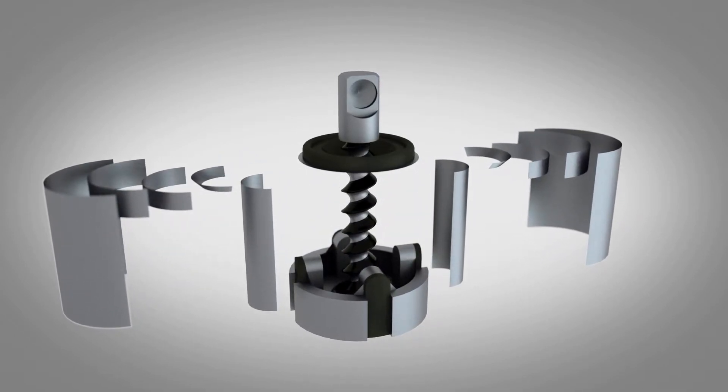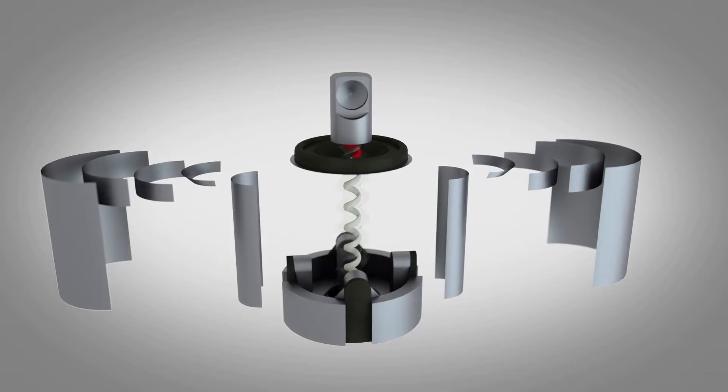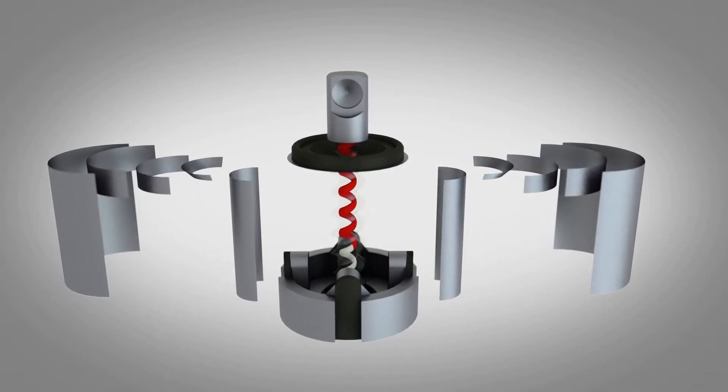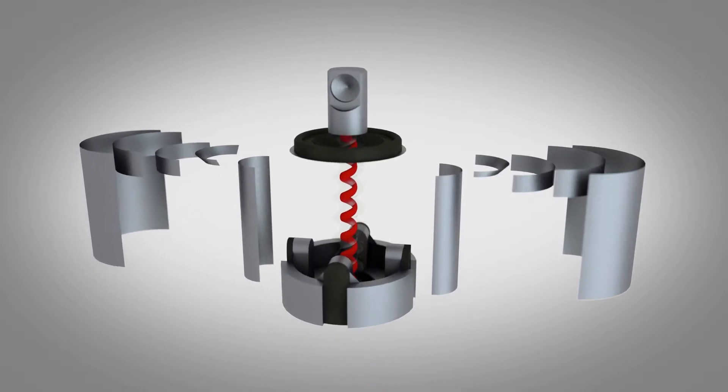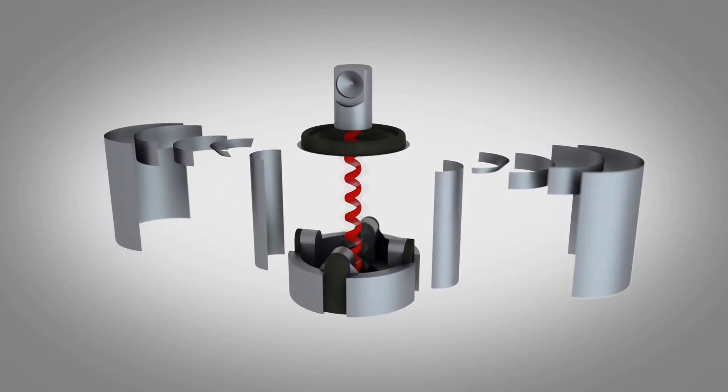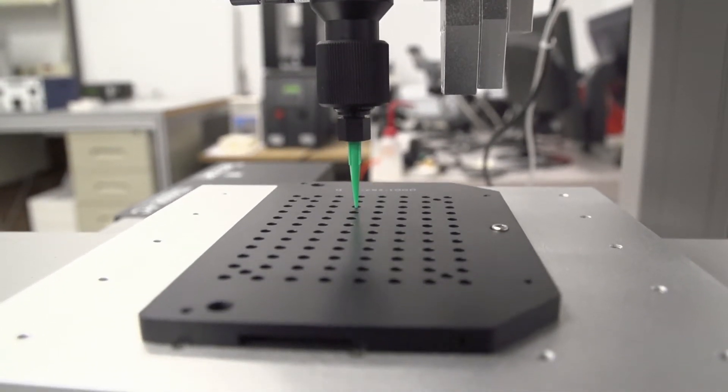When the motor rotates, the single helix rotor continuously turns inside of a flexible rubber stator molded with a twin helix shaped aperture, forming a constantly shifting series of tightly sealed cavities which move a precise, consistent volume of material steadily and continuously toward the pump outlet.